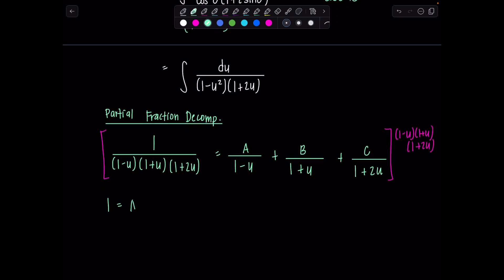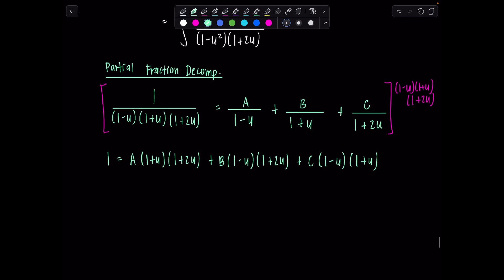So then we're left with 1 equals a times 1 plus u times 1 plus 2u, plus b times 1 minus u times 1 plus 2u, plus c times 1 minus u times 1 plus u. I can start substituting in different values for u and solve for a, b, and c. Let's go ahead. Let's let u equal negative 1. Then I have 1 equals, you see how if u is negative 1, this factor is 0, so all of this is just 0. And then I'm still going to have b times 1 minus negative 1, that's 2. And then 1 plus 2 times negative 1, that's negative 1. This is all going to be 0 if u is negative 1. So then I have 1 equals negative 2b, so b is negative 1 half.